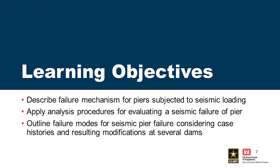For piers, we consider upstream-downstream loading, which is where most of the water and hydrodynamic loading comes from, but we're also considering cross-canyon loading. With seismic loads, these piers — while they may not have been designed for seismic in any direction — in the cross-canyon direction, a lot of these tall slender structures have potential problems. So loading considerations are both upstream-downstream as well as cross-canyon.